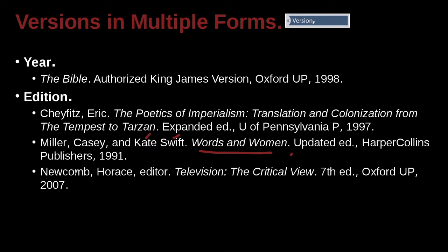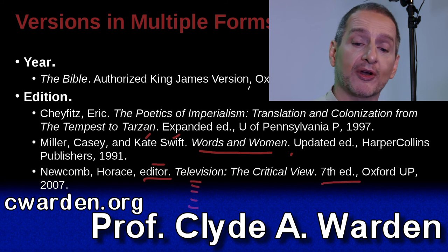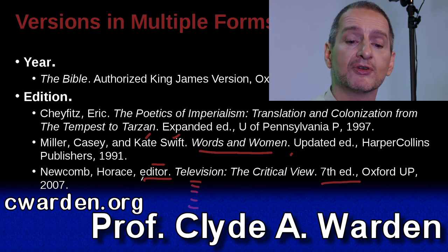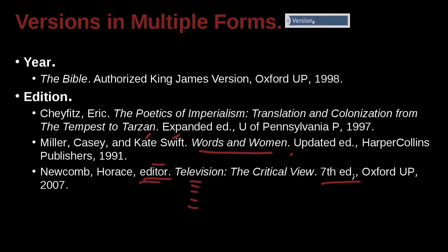Newcomb, Horace — last name first, first name last. He's the editor, and the name of the book is Television: The Critical View, 7th Edition. He's the editor, which means this book probably has many chapters, but we're not citing any specific chapter — we're talking about the book overall. So we list the editor first, and since there's only one editor, not editors. It's from Oxford Press, the 7th Edition.